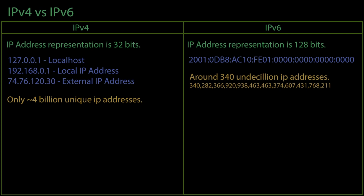In an IPv6 address, sections with just 0 can be omitted. The above address, for example, can be displayed like this. In version 6, local host can be represented by two colons followed by a 1.